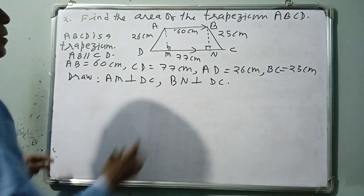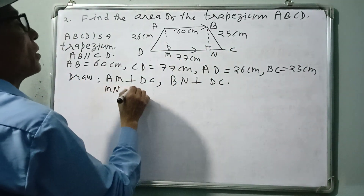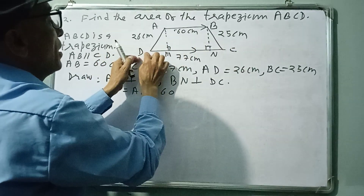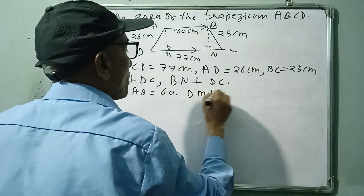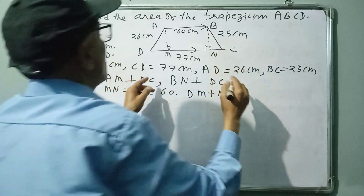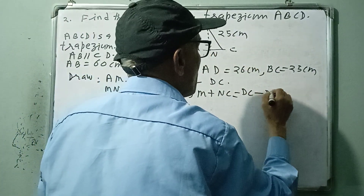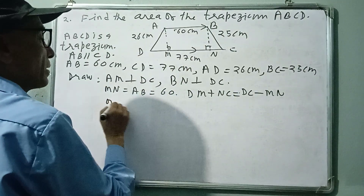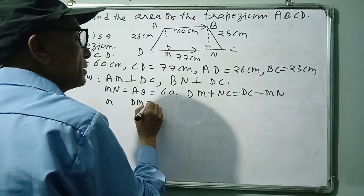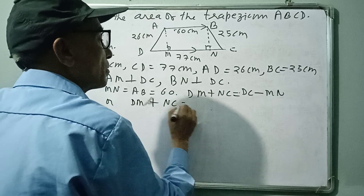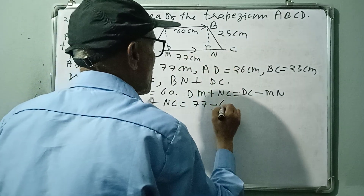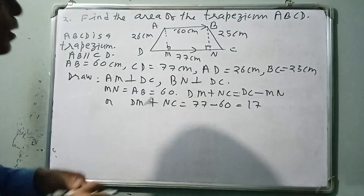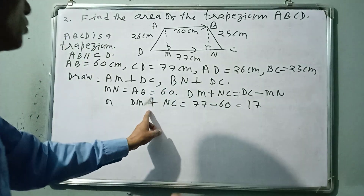Since ABNM is a rectangle, opposite sides are equal, so MN = AB = 60 cm. The total DC = 77 cm, and DM + NC = DC − MN = 77 − 60 = 17 cm. However, DM and NC are both unknown individually.